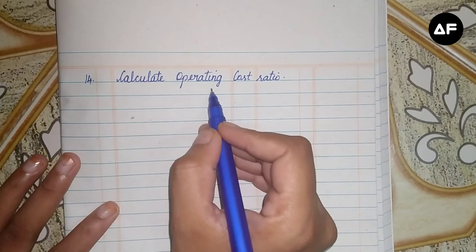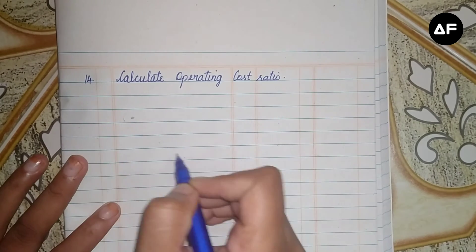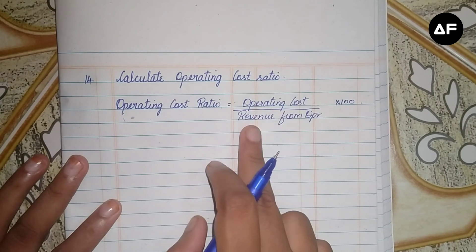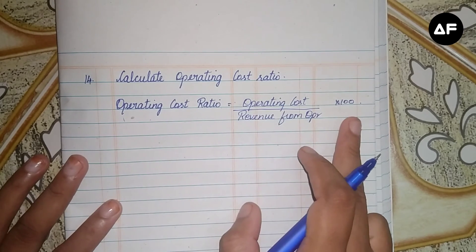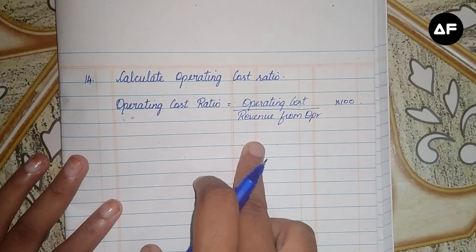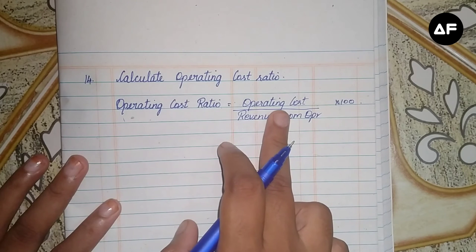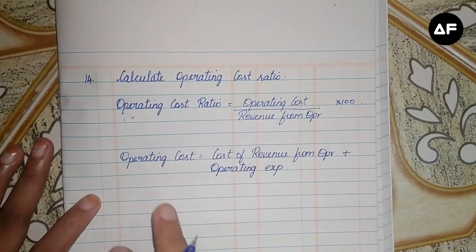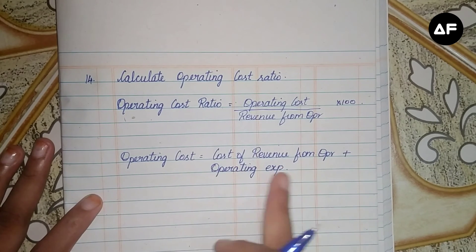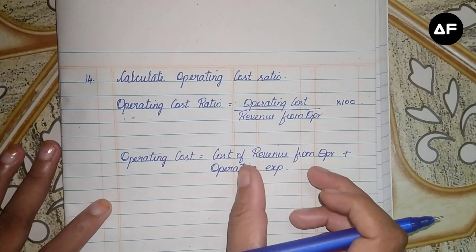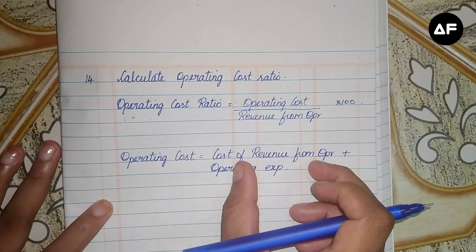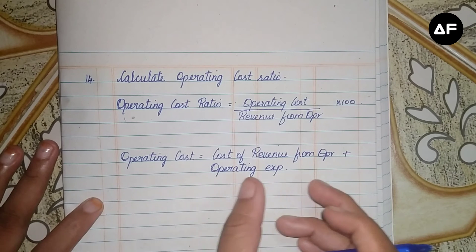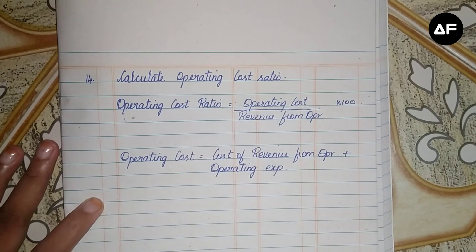This is sum 14, calculating the operating cost ratio. The first step is to write down the formula: operating cost divided by revenue from operations into 100. As per the sum, revenue from operations is already given as 15 lakhs. Next, write down the formula for operating cost: cost of revenue from operations plus operating expenses. We have to find out cost of revenue from operations as it is not directly given.